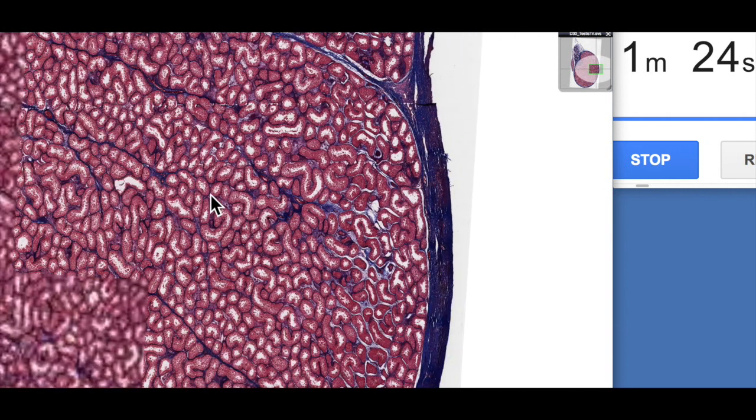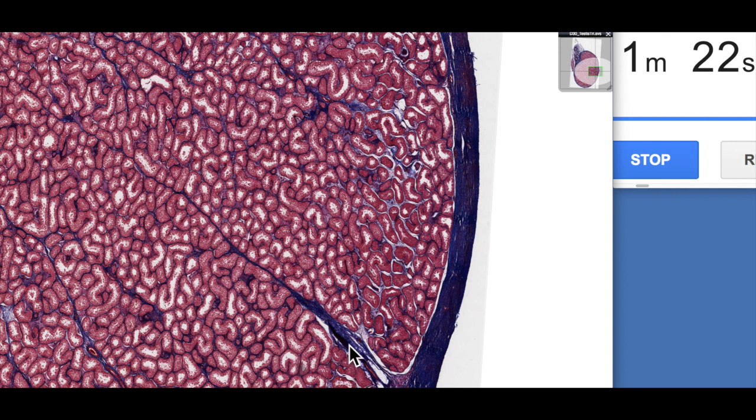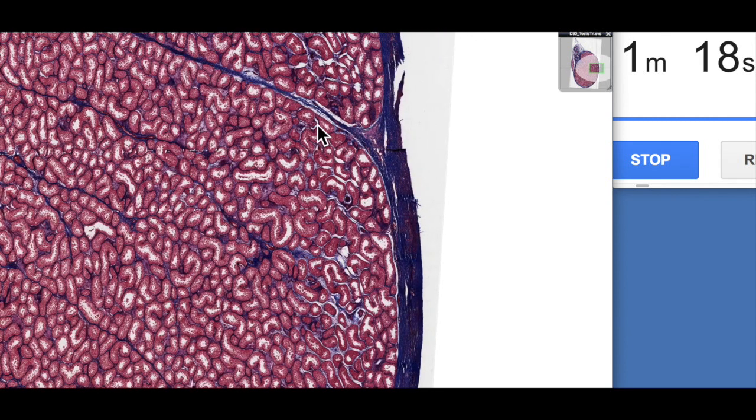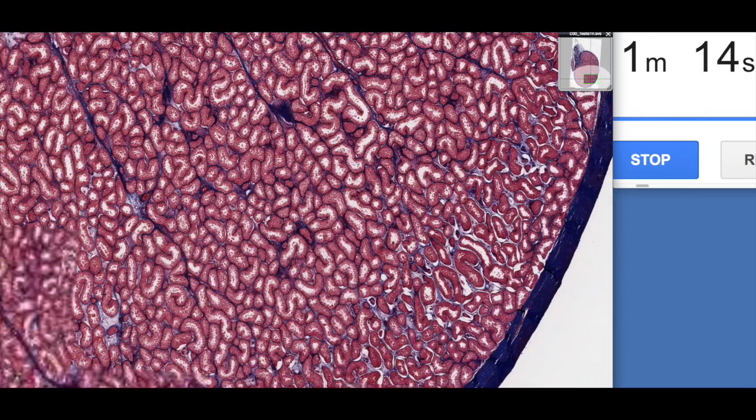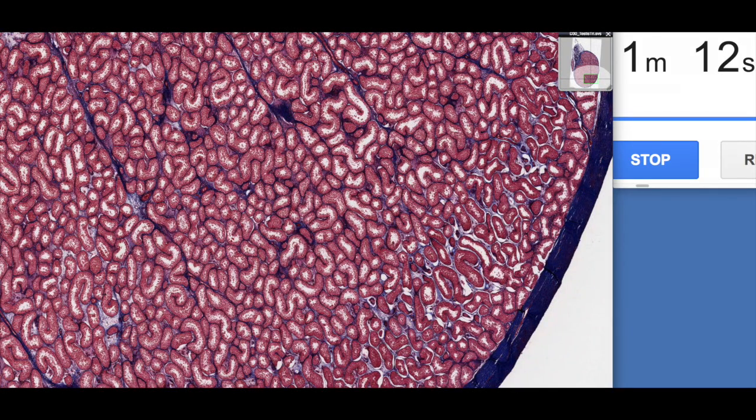If we zoom out a little bit you can see these connective tissue septa. And you can see here's one lobule, here's another lobule, here's another lobule and so on. So those are the major features of the connective tissue there.